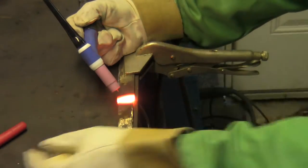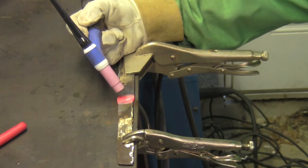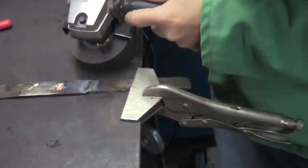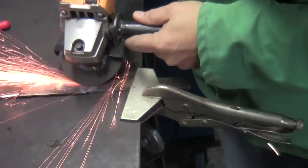The TIG welder has post-flow, which means the shielding gas continues to flow after you've stopped welding, and that protects the weld from contamination while it's cooling.